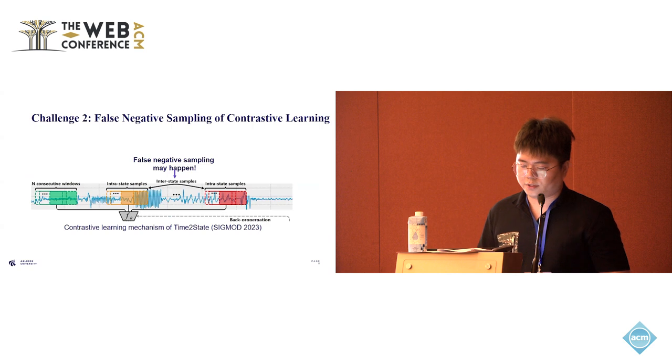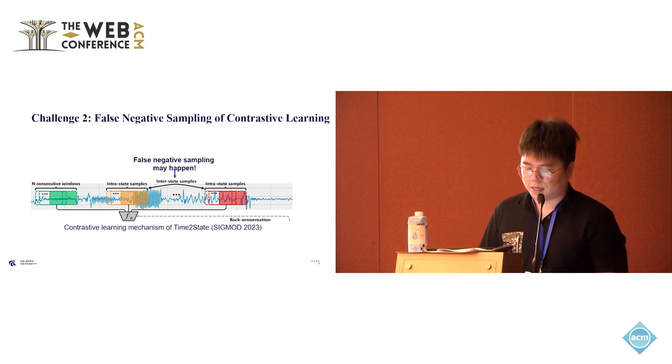Another challenge is false negative sampling in contrastive learning. Contrastive learning is readily used in representation learning and is applied to state-of-the-art USD models. However, this method often overlooks the issue of false negatives. For example, when we randomly sample two windows and regard them as a negative pair, it's generally okay, since the randomly sampled windows are likely to have different states. However, if the total number of states is limited, there is a high probability that the randomly sampled windows belong to the same state, which will lead to the false negative problem.